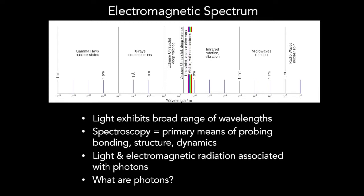Why are we interested in this broad range of light and electromagnetic radiation? Because spectroscopy — the interaction of light with matter — is the primary means that we use to probe bonding structure and dynamics. Light and electromagnetic radiation are associated with photons, so we have to ask ourselves: what are photons?